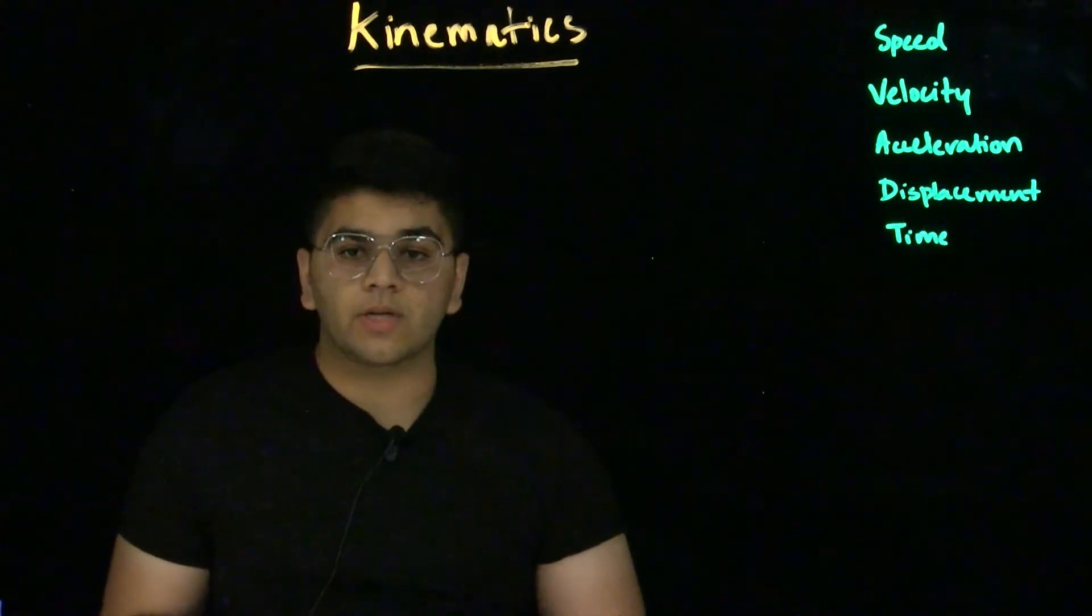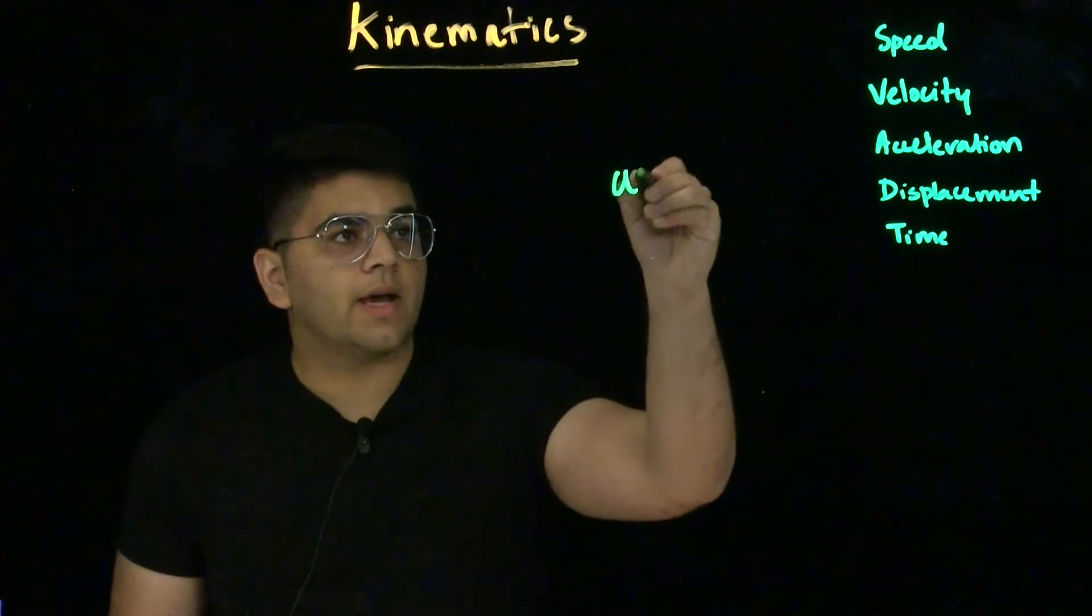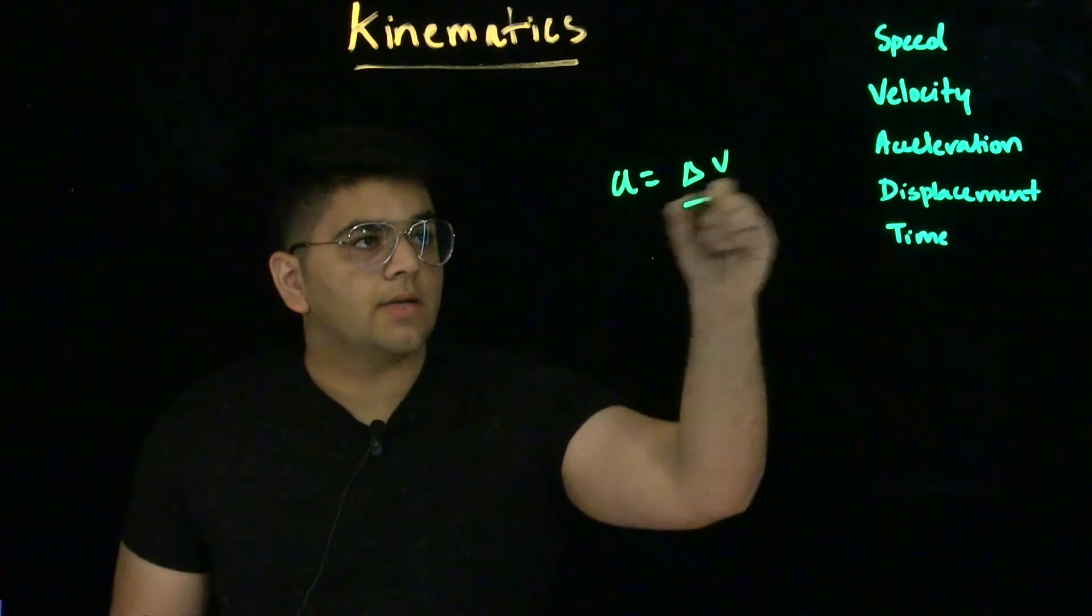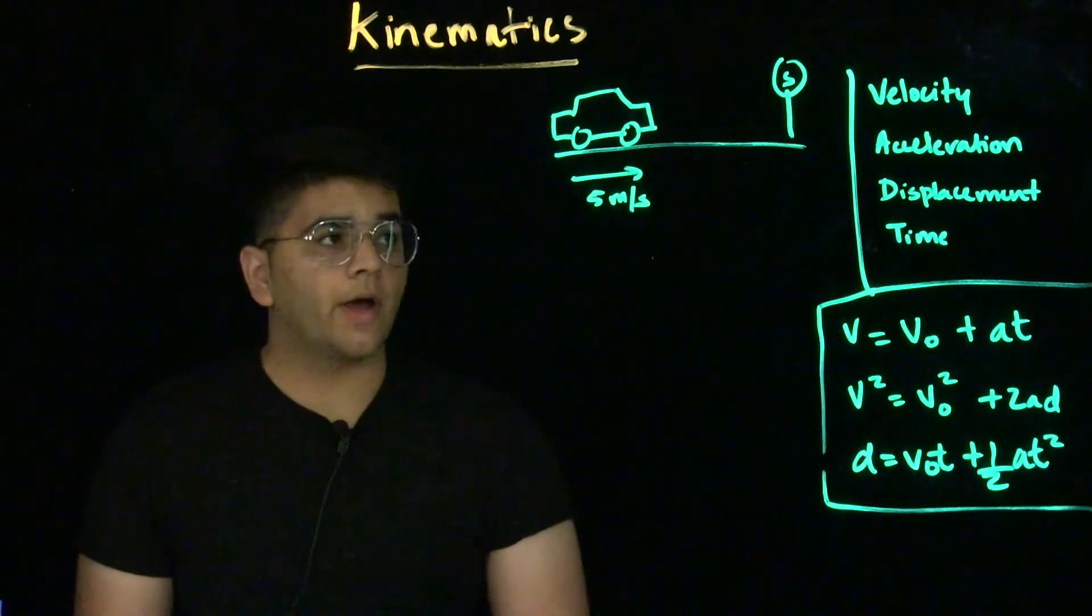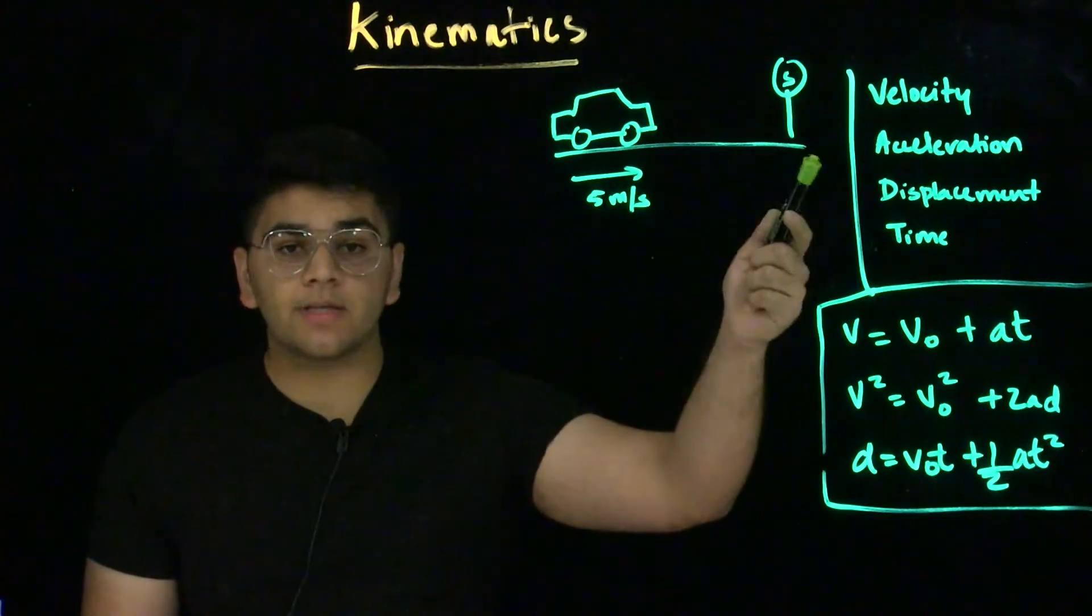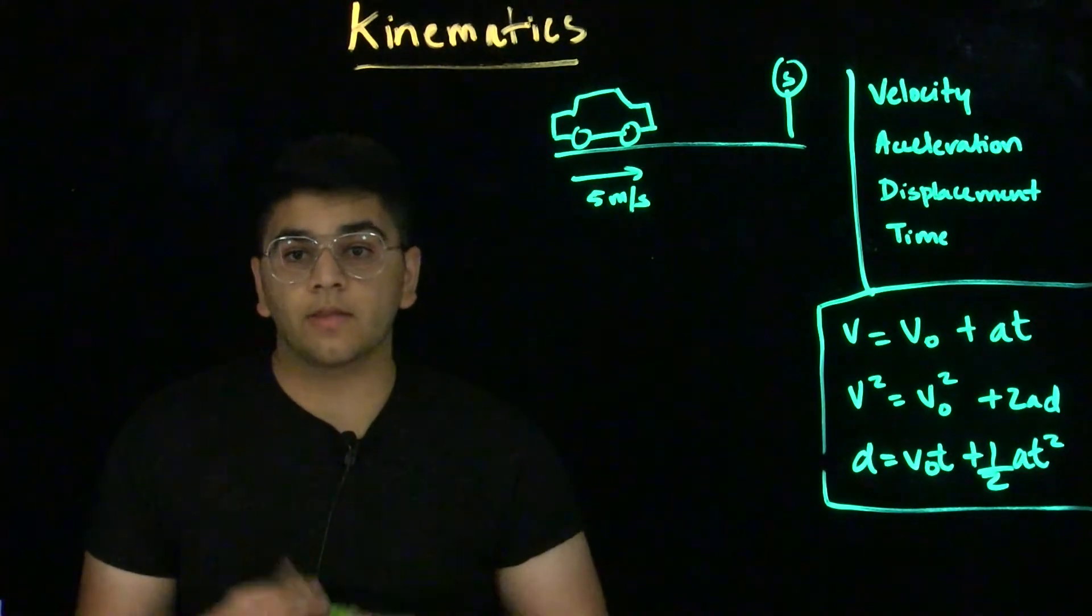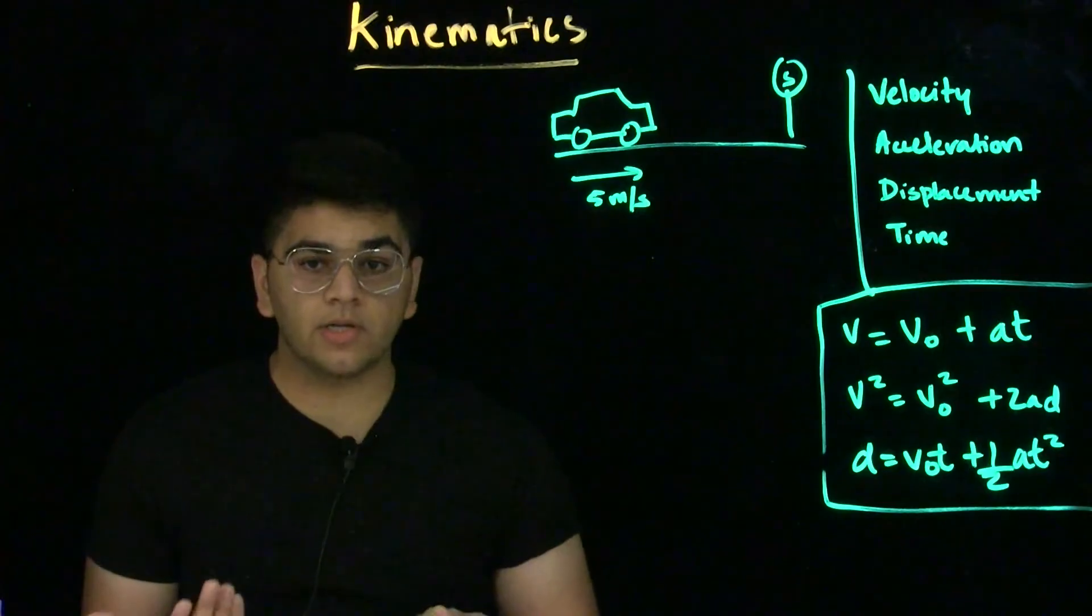When we consider acceleration, we therefore see acceleration as the change in velocity over the change in time. Now, we can use the relationships between these kinematic variables to look at how the motion of an object changes due to an event.